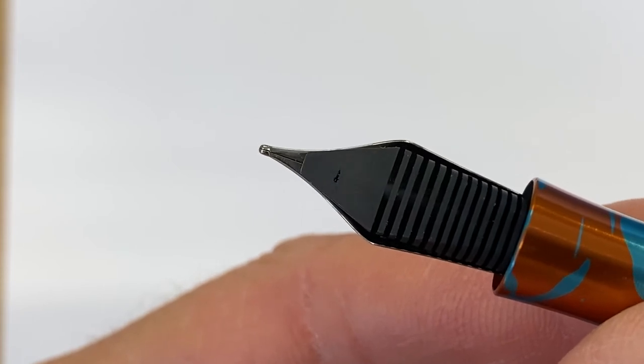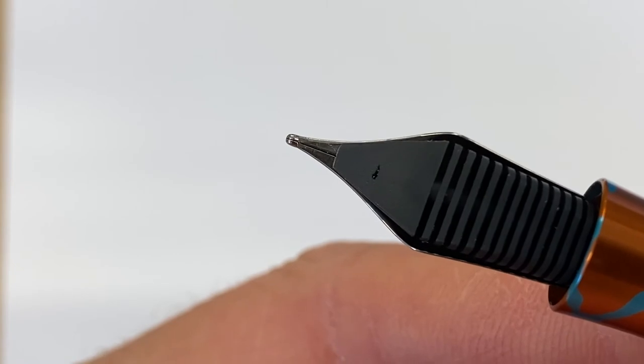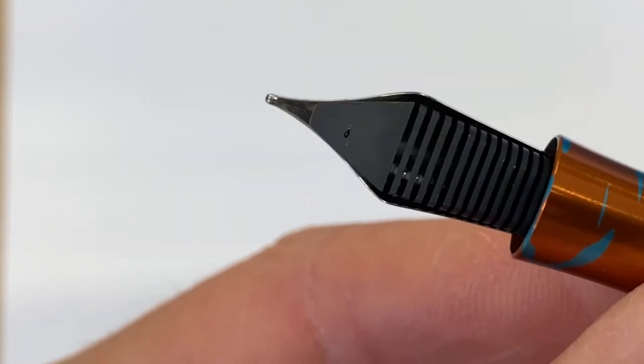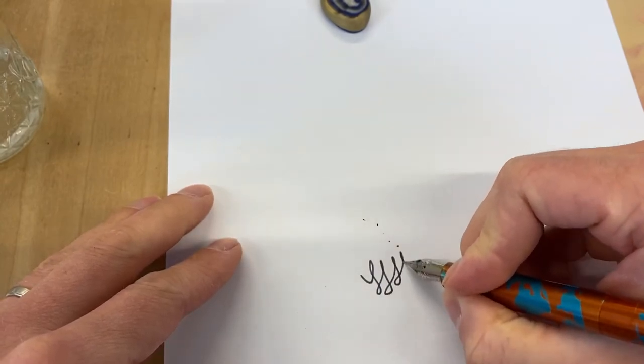All right, now we've got a solid black line between those tines of the nib. So it looks like we have inked the whole way. Maybe there's a little gap there. Maybe I can't quite tell. That might be a little air bubble back there. But let's give it a write and let's see if this works. It may dry out just after a second.